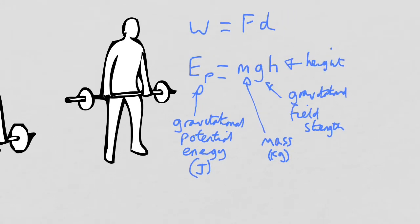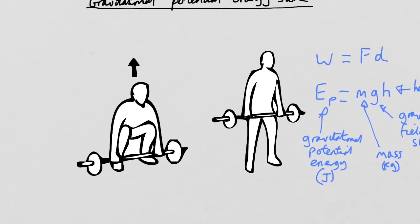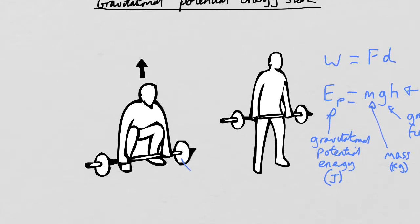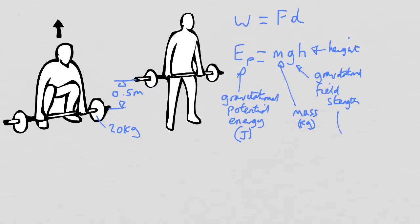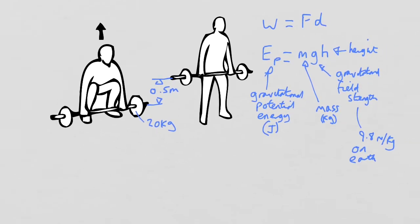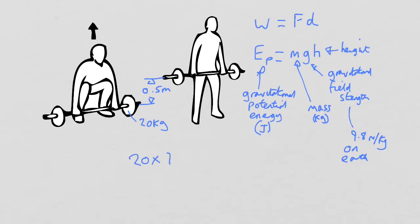So there's our equation for gravitational potential energy. Here's an example: a person is lifting weights with a mass of 20 kilograms a height of 0.5 meters — so 50 centimeters. Using the equation, we take the mass (20), times by gravitational field strength (9.8 newtons per kilogram on Earth), times by the height (0.5 meters). That gives you 98 joules of energy.